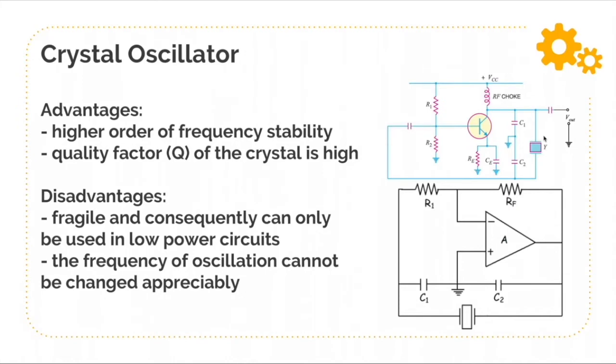Even the smallest deviation from Fp will cause the oscillator to act as an effective short. Consequently, we have an extremely stable oscillator.